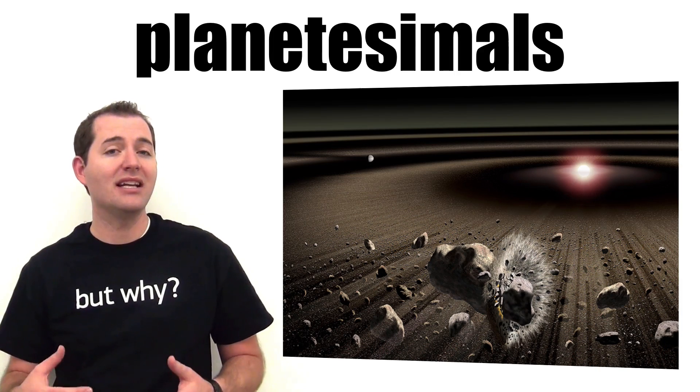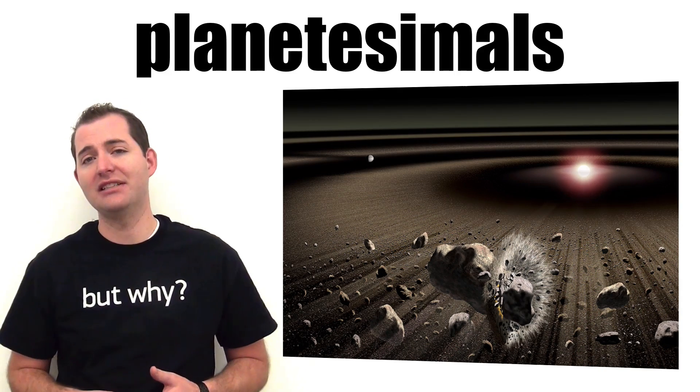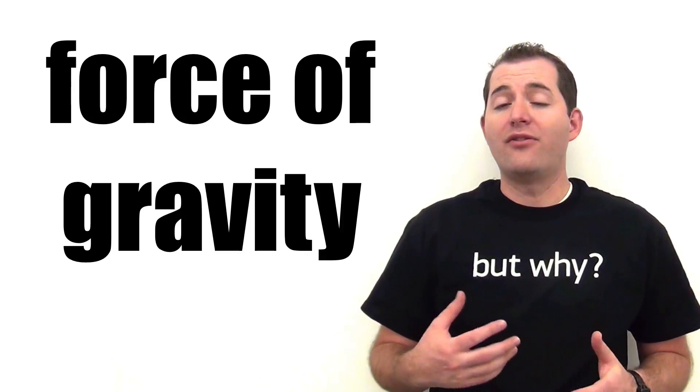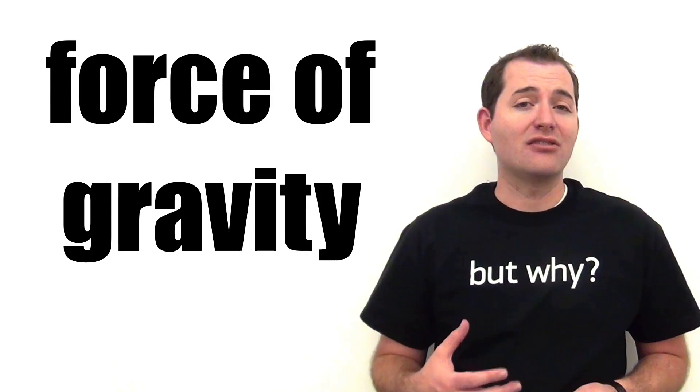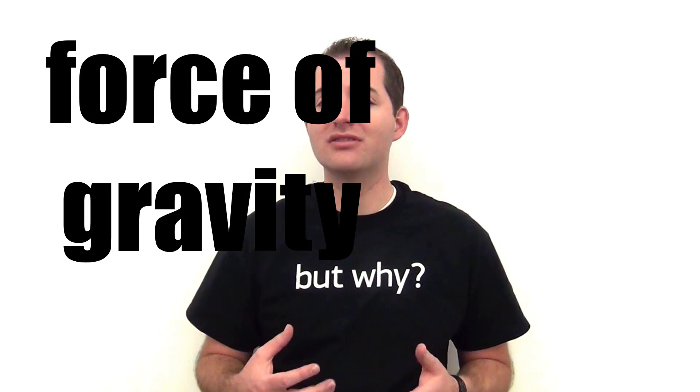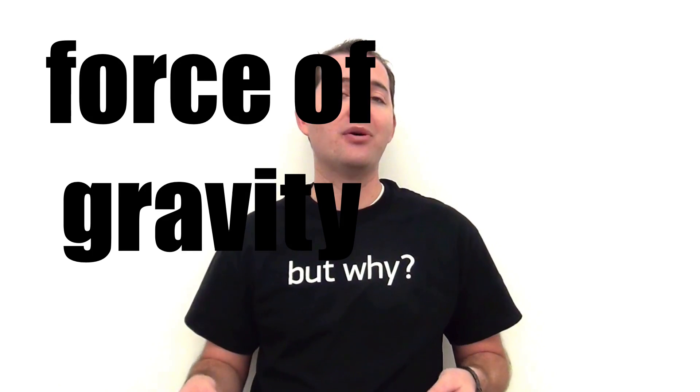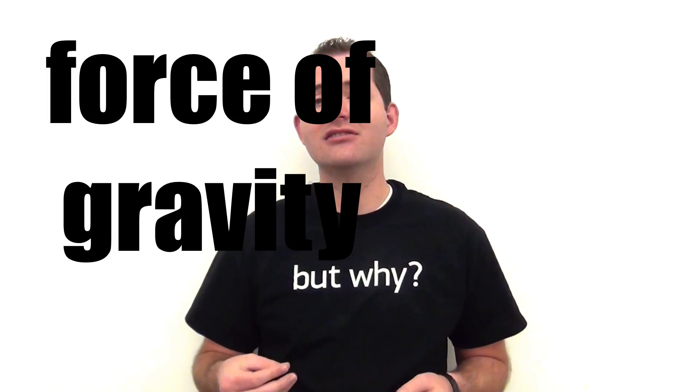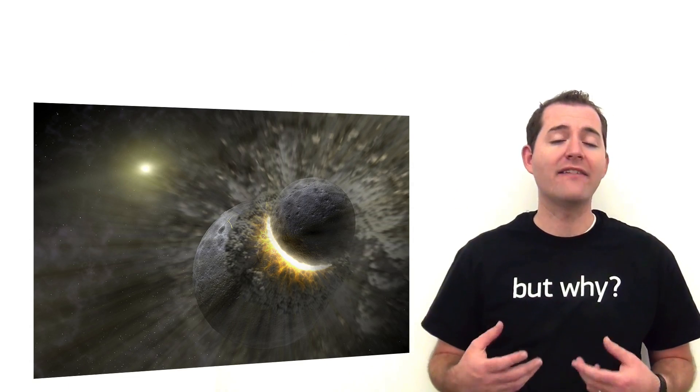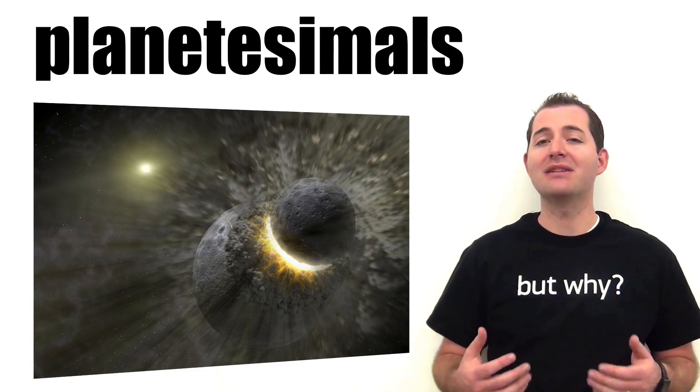At the same time that this protostar is becoming a main sequence star, there are also planetesimals, or the beginnings of planets, forming in the accretion disk. This process of planet formation in the accretion disk can take between 10 million and 100 million years. The force of gravity is very active in the accretion disk at this time as well. Just as it pulled mass into the central clump or to the protostar, it's also responsible for pulling clumps together in the accretion disk. As these clumps in the accretion disk continue to grow, they eventually become classified as planetesimals.